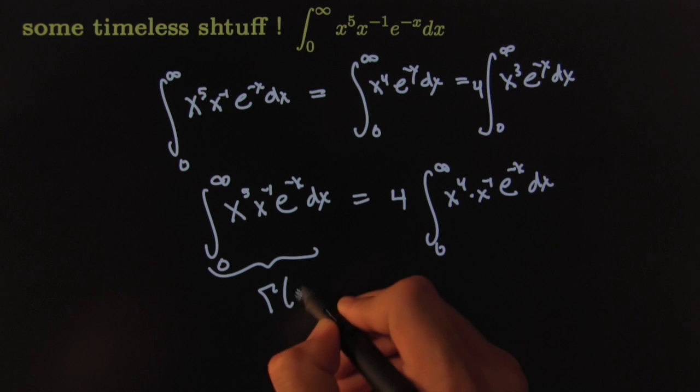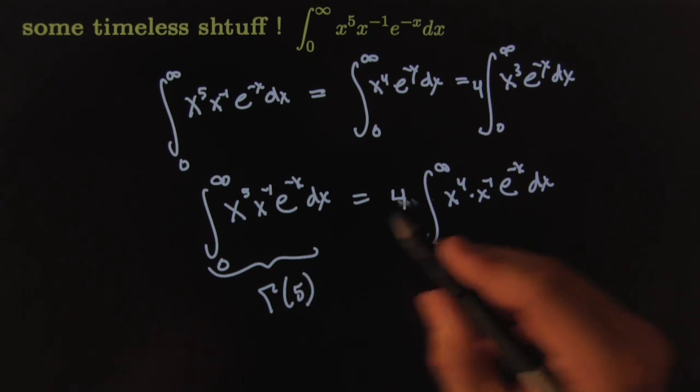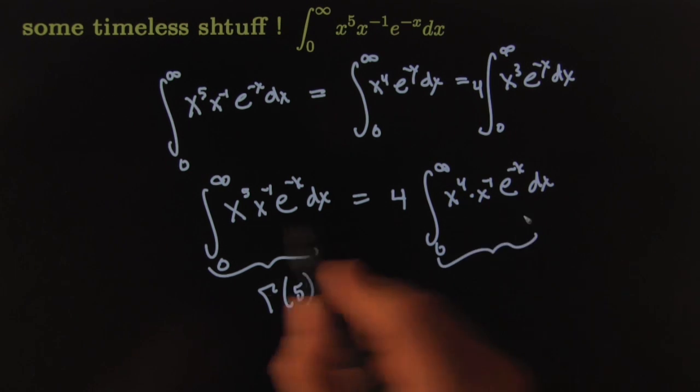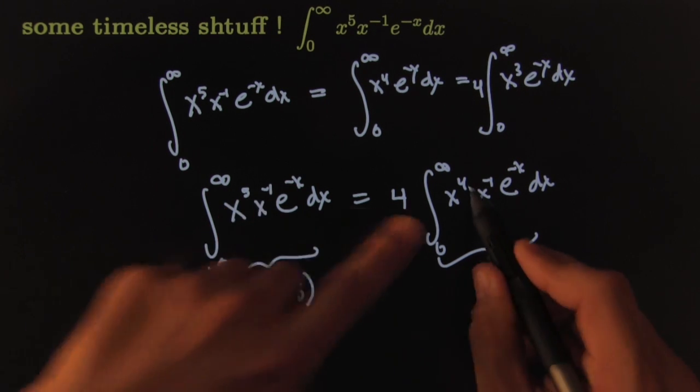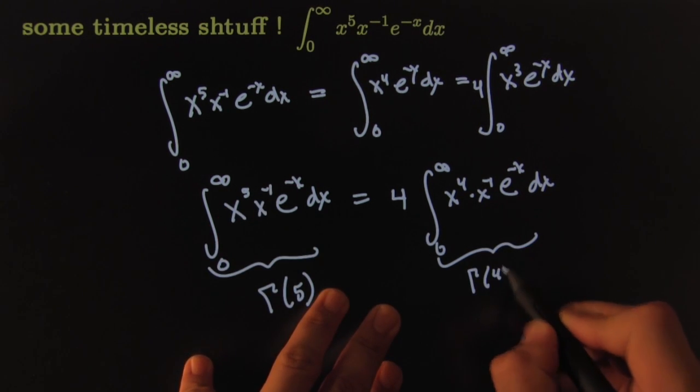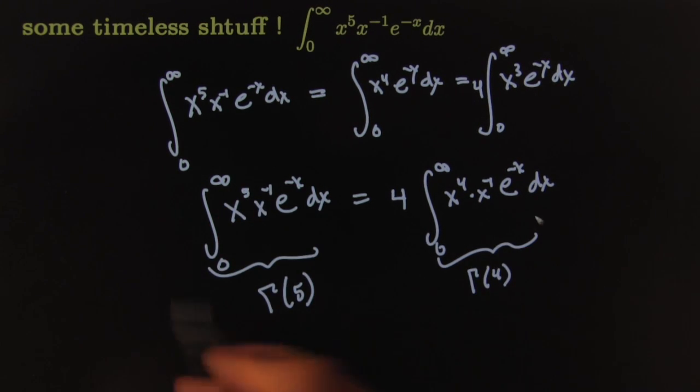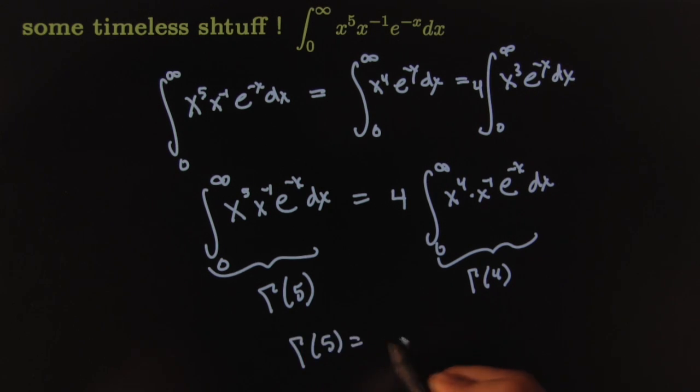If that's the case, then this one is exactly the same format as that, except it's called the gamma function for four. This is called the gamma function evaluated at four. And what this statement says, it says that the gamma function at five is equal to four times the gamma function at four.